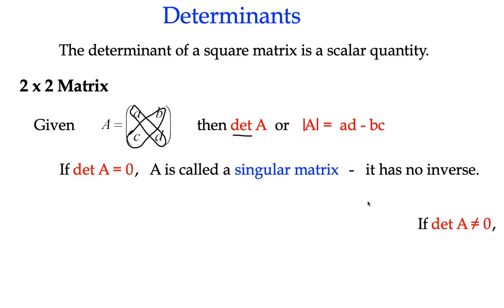then we call the matrix a singular matrix and it has no inverse. We'll talk more about inverse matrices a wee bit later, but that's the property that would determine that it has no inverse if the determinant is 0.